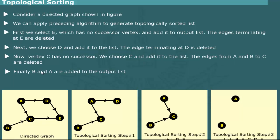Since edges from B and A to C are deleted, we can select B and A and add them to the list. In this way, we end up with the list B, A, C, D, E, which is the desired topological sort order.